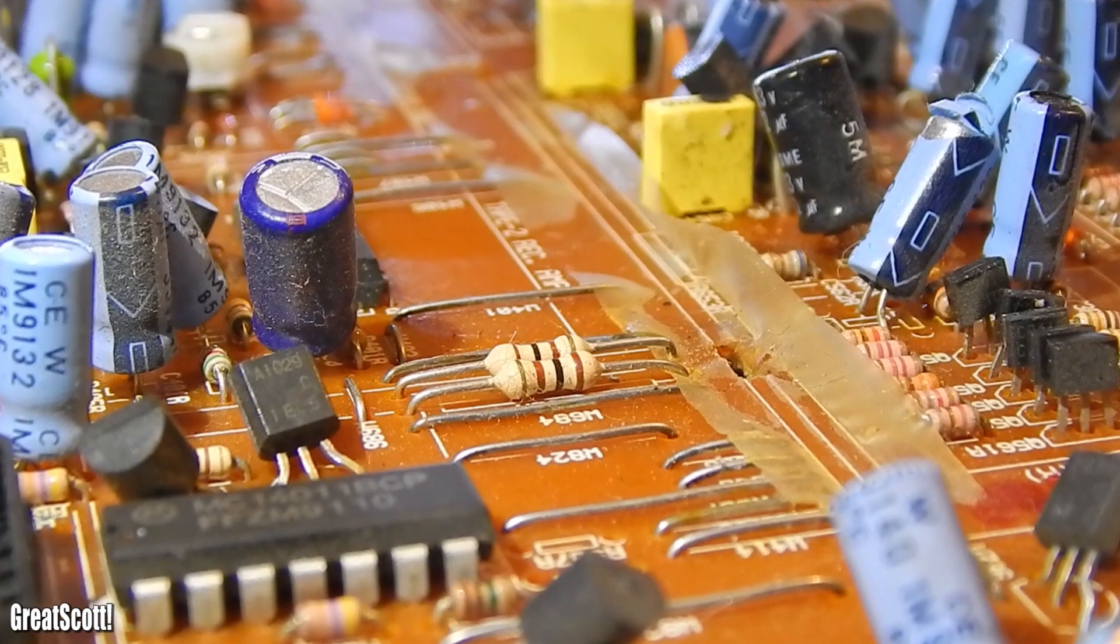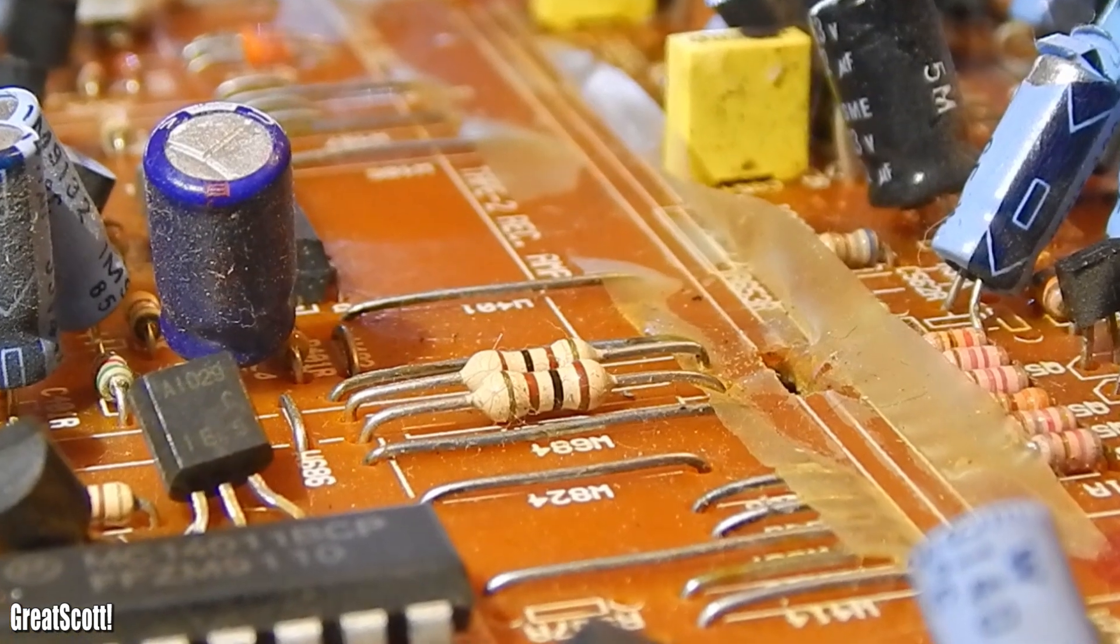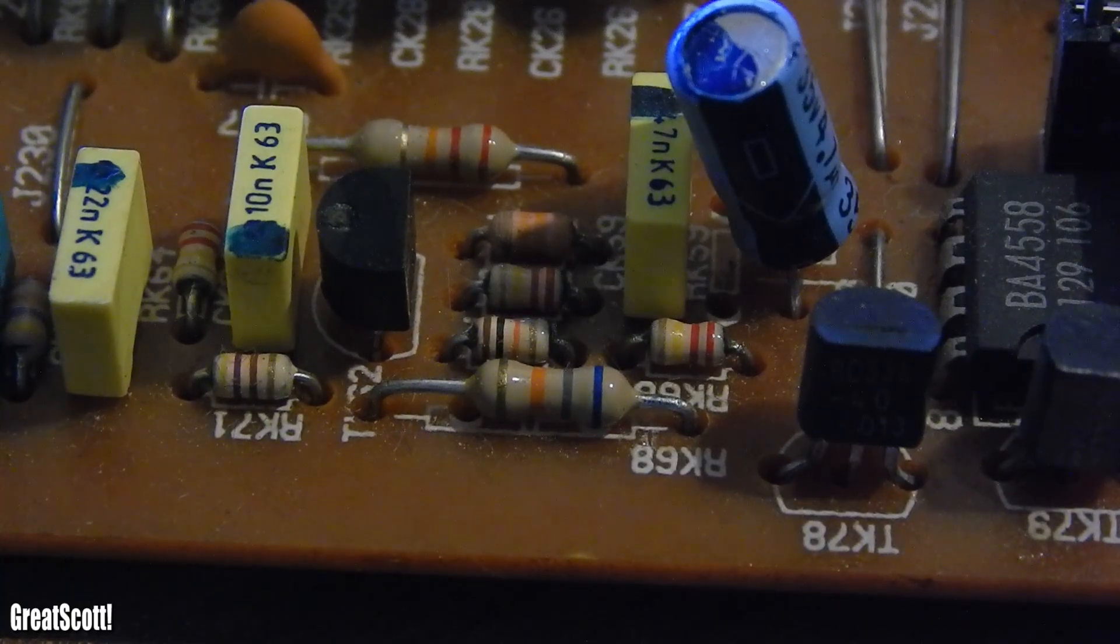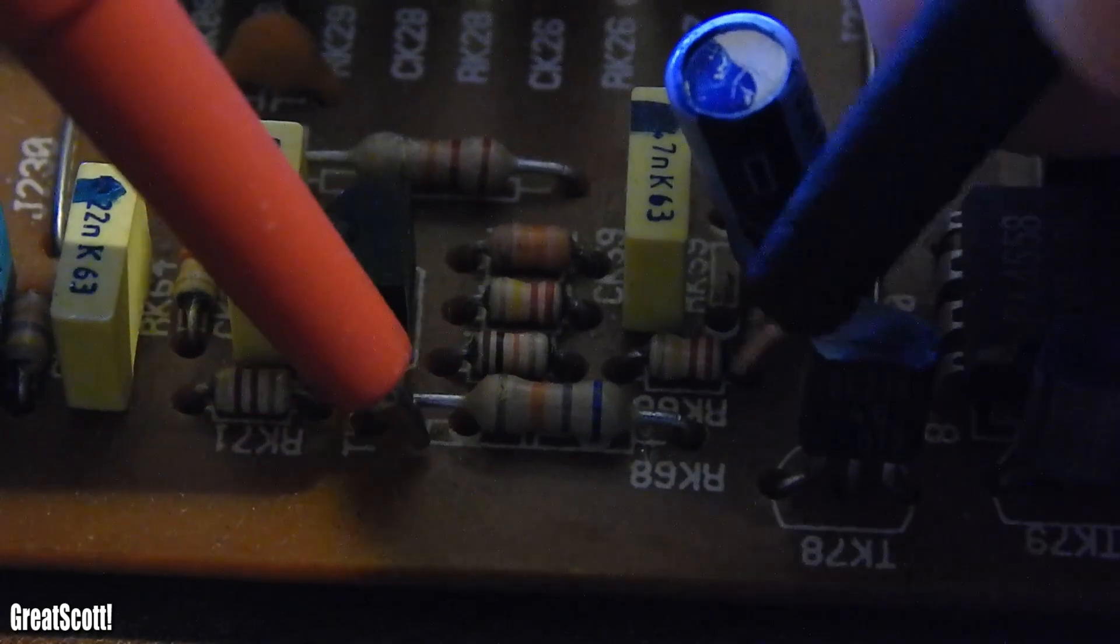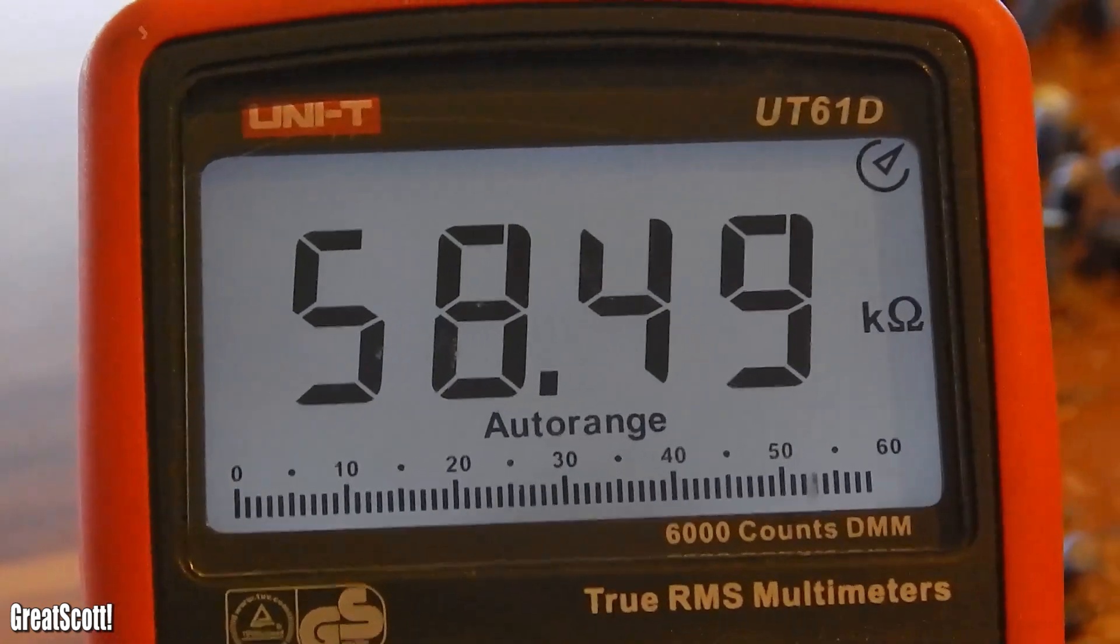But measuring the resistance in a built circuit will mostly fail, because current chooses the way of least resistance. Meaning that the measuring current will not only flow through that one resistor. Here I have the same resistor in the original circuit and it tells me 58 kilo ohms, which is incorrect.